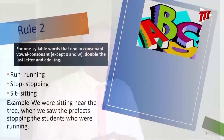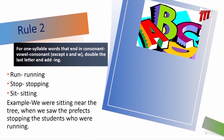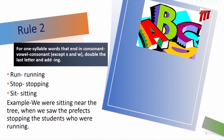If we were to use these words in a sentence, we would have: 'We were sitting near the tree when we saw the prefect stopping the students who were running.' I'm sure that this has happened at your school before. And by using the spelling rule correctly, you can convey the information in your sentence accurately.